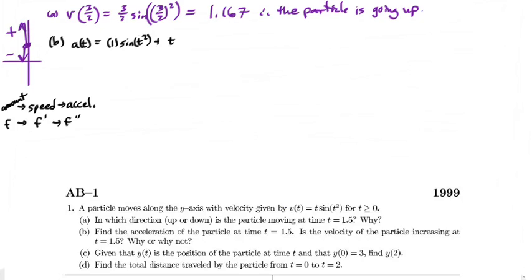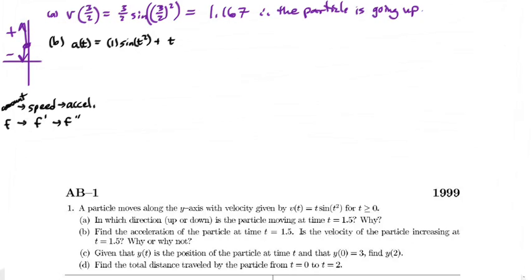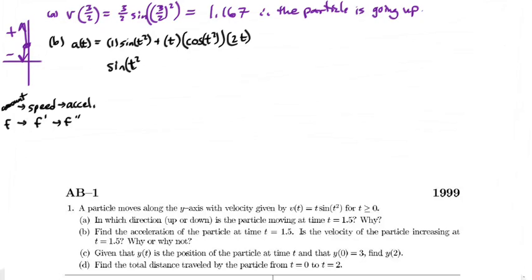You always have to use the chain rule with trig functions. The derivative of sine(t) is cosine(t), then multiply by the derivative of the inside. Here the inside is t squared, so its derivative is 2t. Simplifying, we get: sine(t²) plus 2t² times cosine(t²).